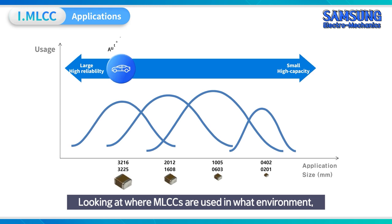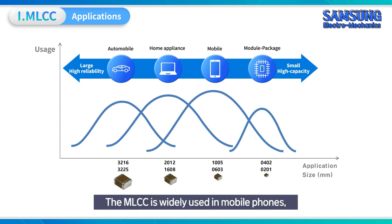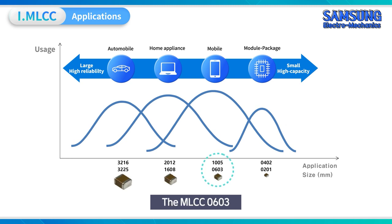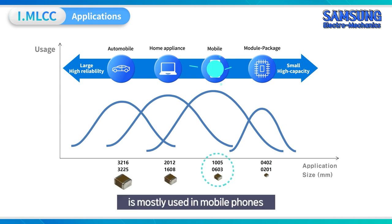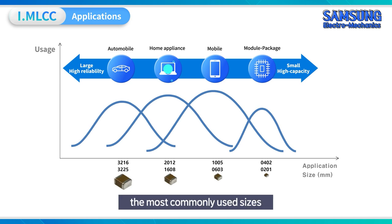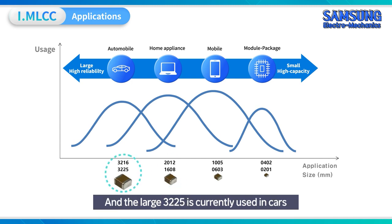Looking at where MLCCs are used by environment, the left side represents harsher conditions and the right side indicates lower temperatures and voltage. MLCCs are widely used in mobile phones where voltage and temperature are low and mounting space is very small. The small 0603 MLCC, measuring 0.6mm by 0.3mm, is mostly used in mobile phones. For vehicles, the most commonly used sizes are 1608 and 2012, and the large 3225 is currently used in cars.